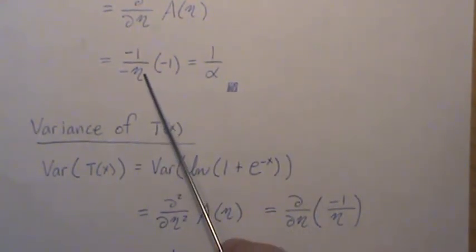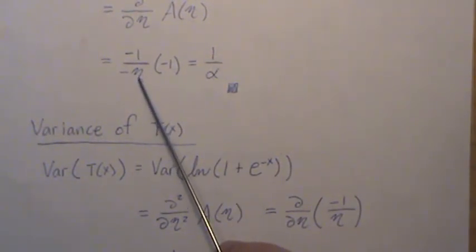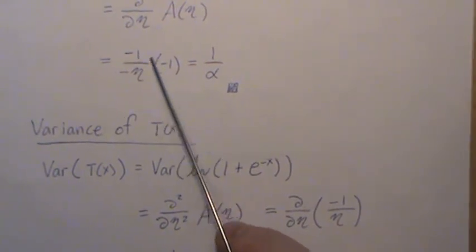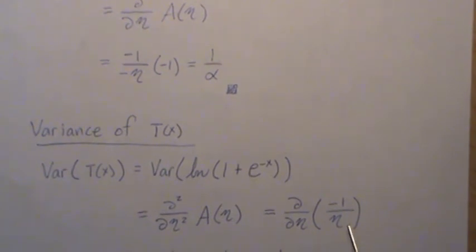And so here, you can't populate it with alpha. You have to keep it in terms of eta. So these minuses cancel, and we're left with minus 1 over eta. And so that's what needs to go here.